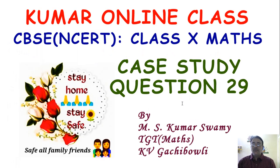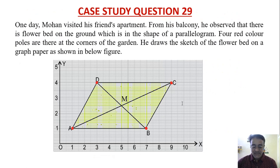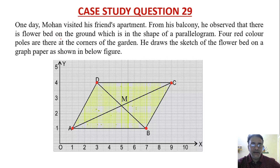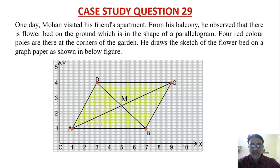We are going to start case study question number 29, which is based on coordinate geometry. One day Mohan visited his friend's apartment. From his balcony, he observed a flower bed on the ground in the shape of a parallelogram, with four red color poles at the corners of the garden. He draws a sketch of the flower bed on a graph paper as shown in the figure below. Based on this figure, we have to find the answers to the questions.